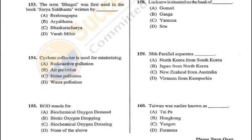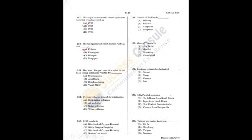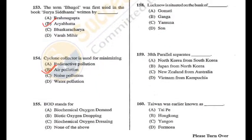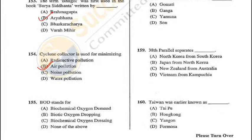Question 154: Cyclone collector is used for minimizing air pollution — B is the correct answer. Question 155: BOD stands for Biochemical Oxygen Demand, which represents the amount of oxygen consumed by bacteria and other microorganisms while they decompose organic matter under aerobic conditions — A is the correct answer.